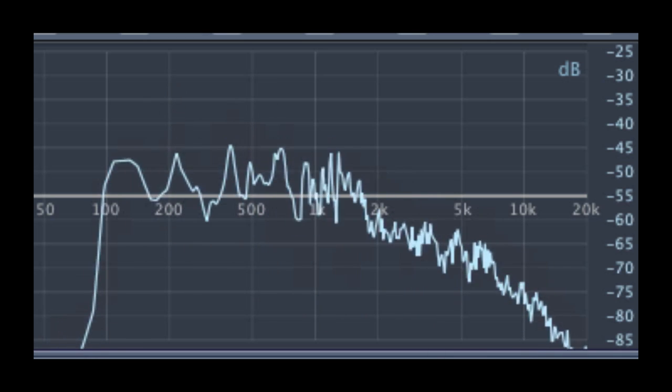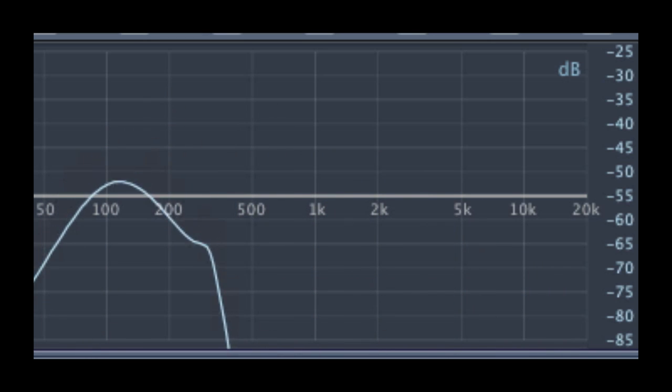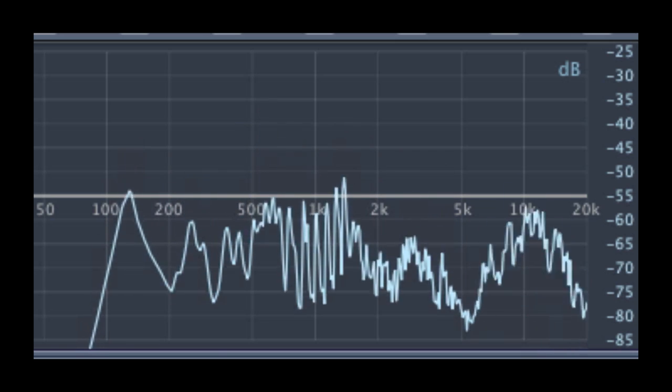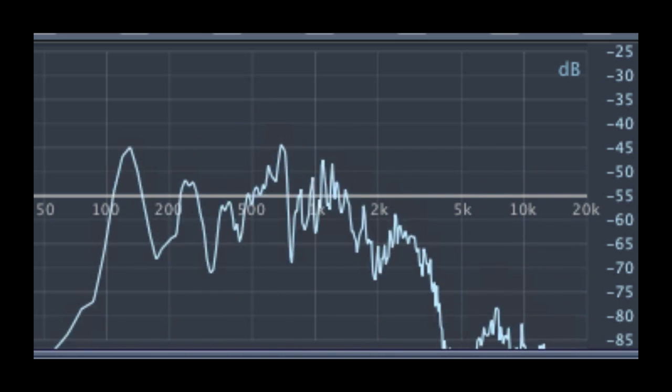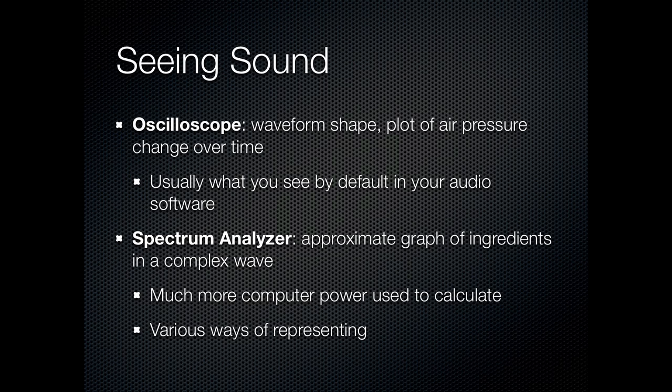Extremely low bass sounds are shown further to the left, whereas higher sounds end up on the right. It takes much more computer power to calculate this than the oscilloscope view, and there are many different ways you can represent the spectrum view.